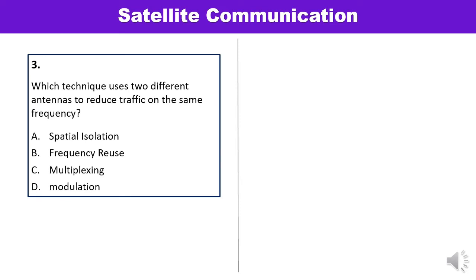Question 3: Which technique uses two different antennas to reduce traffic on the same frequency? Options are spatial isolation, frequency reuse, multiplexing, or modulation. Frequency reuse is the technique which uses two different antennas to reduce traffic on the same frequency — answer B is correct.